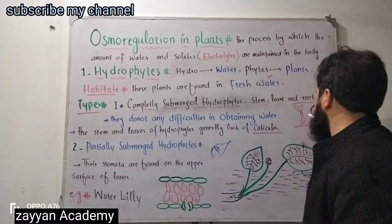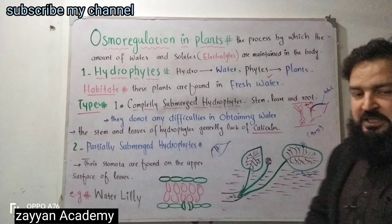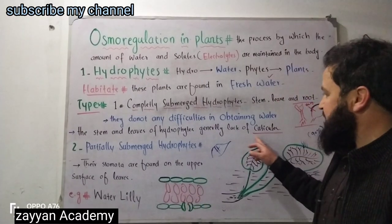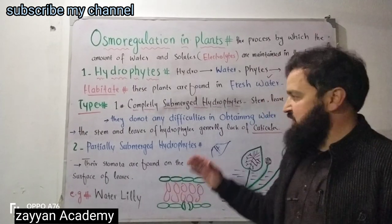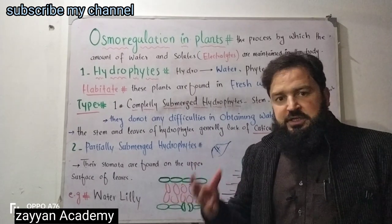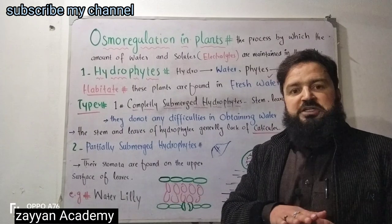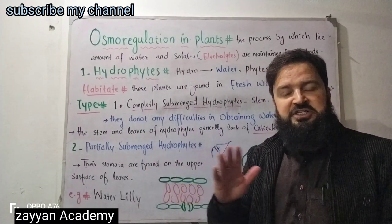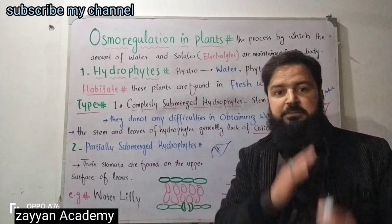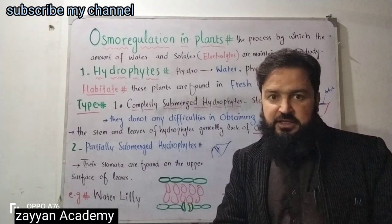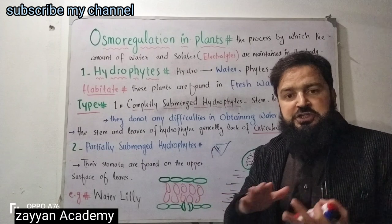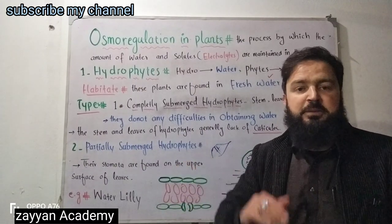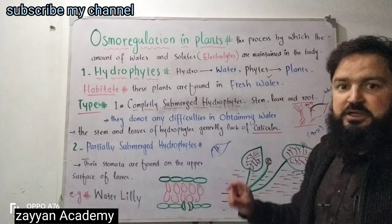The cuticle functions to minimize water loss from the plant. Without a cuticle, water can come out of the plant and the plant may die. The lack of cuticle allows absorption, and the cuticle helps maintain the water balance through minimizing transpiration.